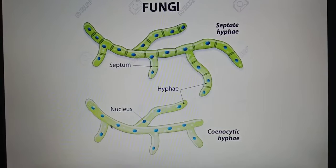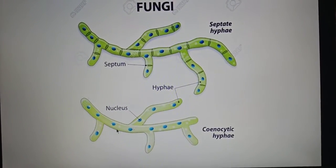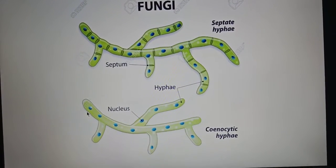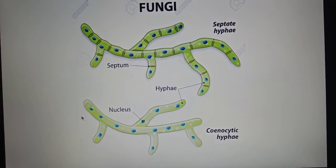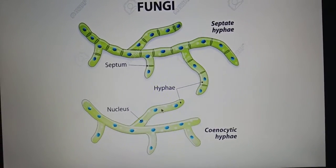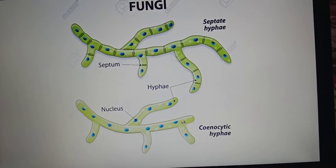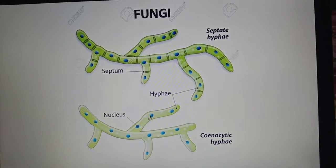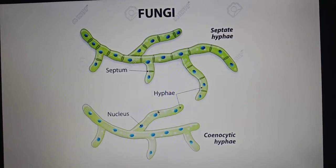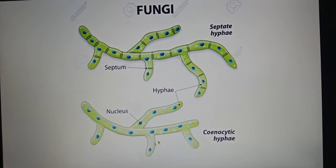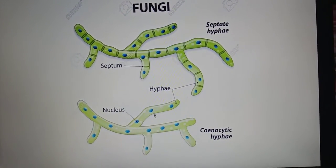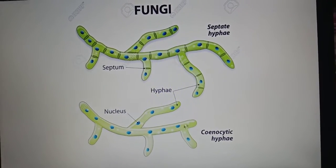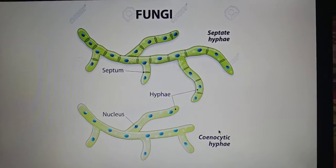In contrast, aseptate hyphae have no walls in the entire filament. The cytoplasm — shown in green — is continuous with no boundaries. All nuclei remain suspended in this single continuous cytoplasm, making the filament multinucleated. The entire filament is a single cell with multiple nuclei suspended throughout. This condition is called coenocytic.